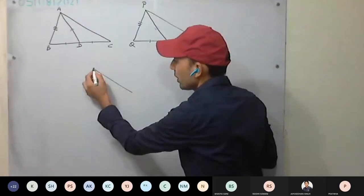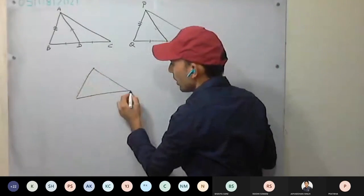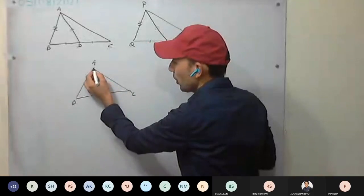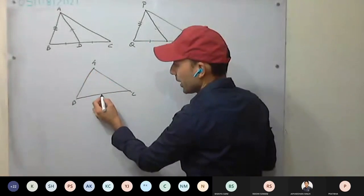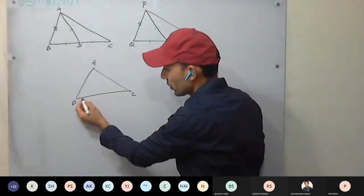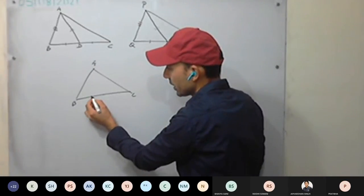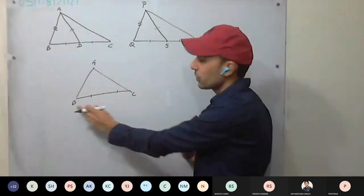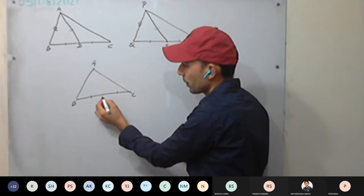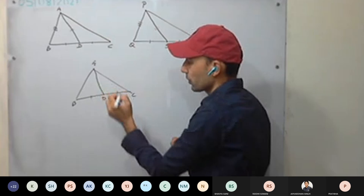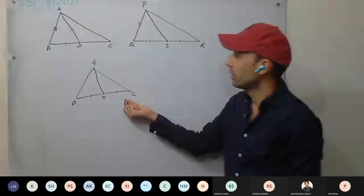If we draw a triangle ABC, I have to draw a median from vertex A on side BC. To draw the median, first you take the midpoint of this side — it means this part equals this part, we divide the side into two equal parts. Then join to the opposite vertex. This is the median. Similarly, PS is the median here.